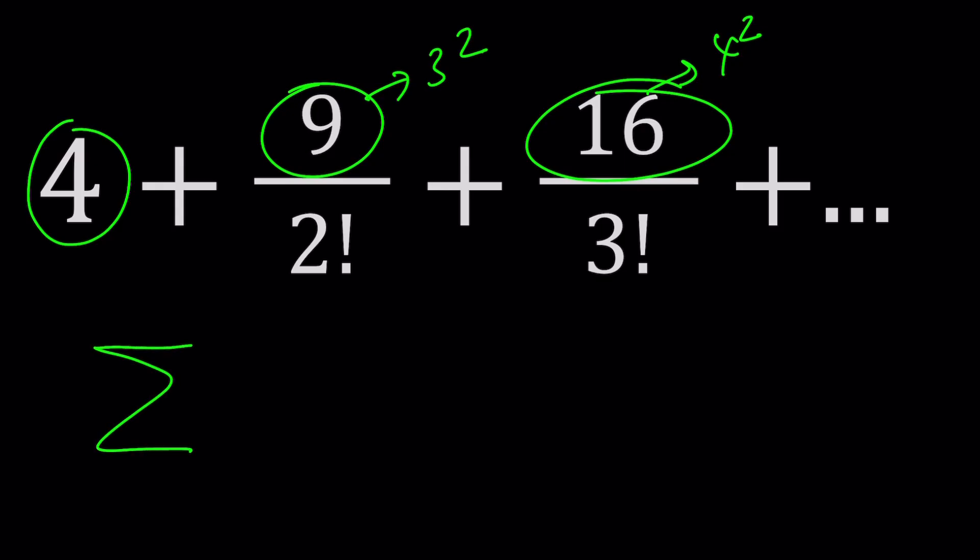It's the uppercase sigma in Greek. I'm going to use n equals 1 to infinity. Notice that the first term is 2 squared divided by 1 factorial, but 1 factorial is 1 so you don't necessarily see it. So it's going to be 1 to infinity, (n+1) squared.